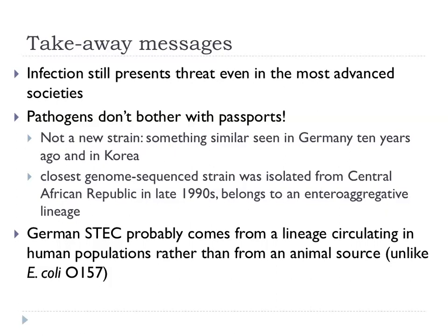So what are the takeaway messages? Germany is one of the most advanced societies on the planet, yet infection still presents a threat. Pathogens don't bother with passports. It's not a new strain — something similar was seen in Germany ten years before, and apparently a similar strain was seen in Korea a few years ago. The closest genome sequence strain came from the Central African Republic and belongs to this enteroaggregative lineage. How do these strains relate and how are they getting around?